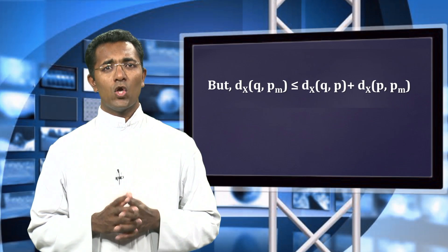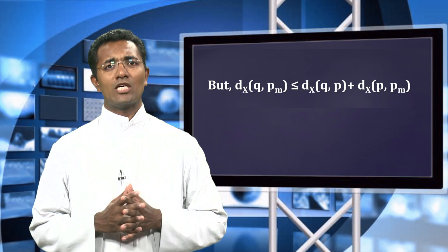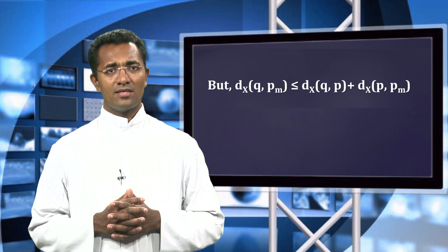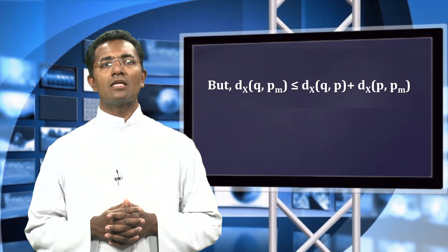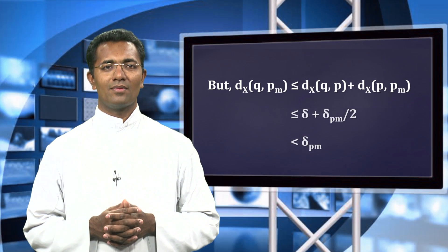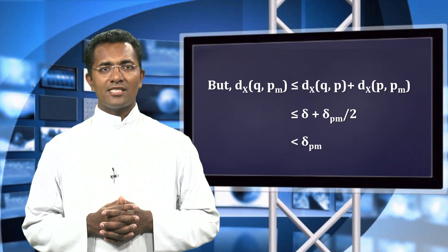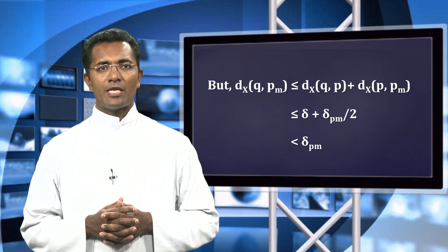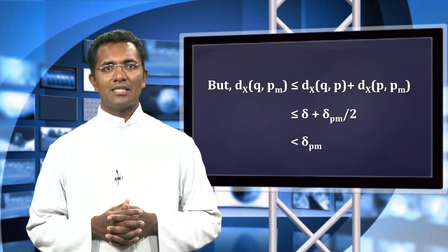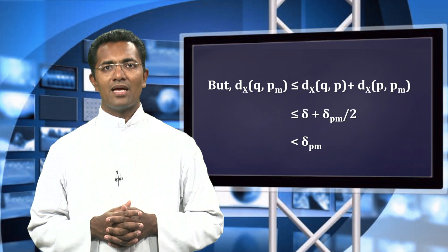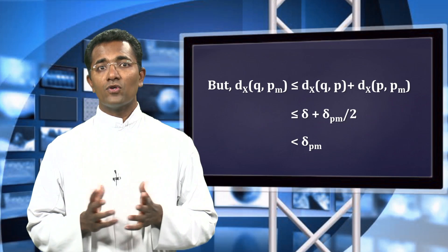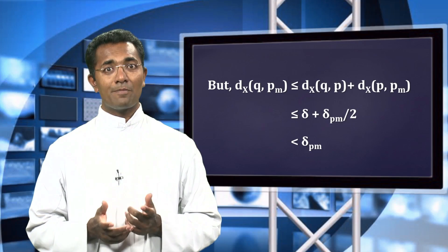Moreover, applying the triangle inequality, we can see that the distance between q and p_m is less than or equal to the distance between q and p plus the distance between p and p_m. That is, the distance between q and p_m is less than delta_{pm} over 2 plus delta, which is of course less than delta_{pm} over 2.